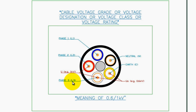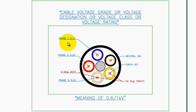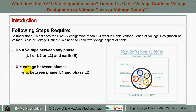So here it could be phase 3 and earth voltage difference, or phase 2 and earth voltage difference, or phase 1 and earth voltage difference. That is what U0 means.